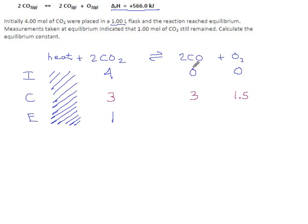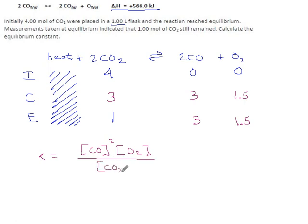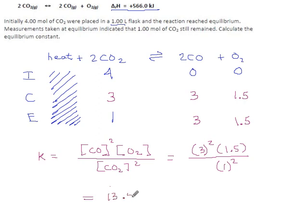Now that we have that: we started with no carbon monoxide and made 3 moles per liter of it, so we're up to 3. We started with no oxygen and made 1.5 moles per liter, so we're up to 1.5. They want the equilibrium constant, so the equilibrium law gives us products over reactants: CO squared times O₂, divided by CO₂ squared. Plugging in numbers: CO is 3, squared; O₂ is 1.5; CO₂ is 1. Three squared is 9, times 1.5 is 13.5, divided by 1 is 13.5. All data had three significant digits, so K = 13.5.